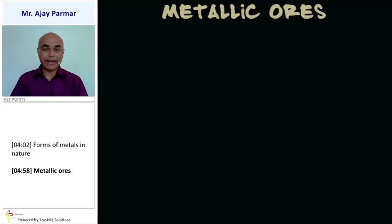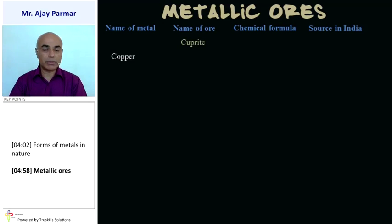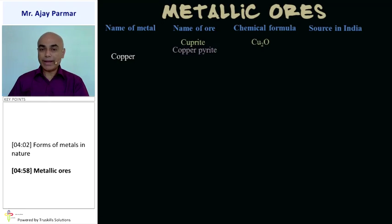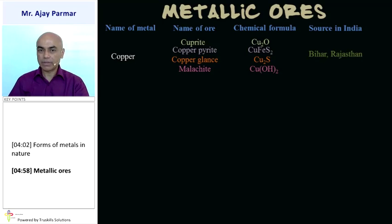Some metallic ores, their names, molecular formulas, and sources in India are important to remember — for MCQ and two-marker questions. Starting with copper: the ore cuprite has formula Cu₂O; copper pyrite is CuFeS₂; copper glance is Cu₂S; and malachite is Cu(OH)₂. These ores of copper are found in Bihar and Rajasthan in India.